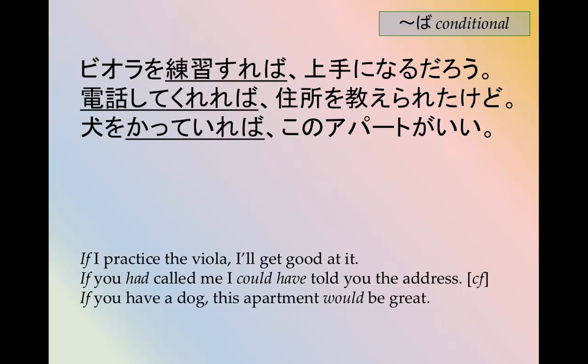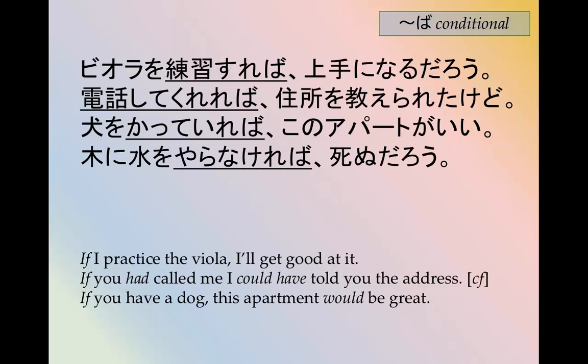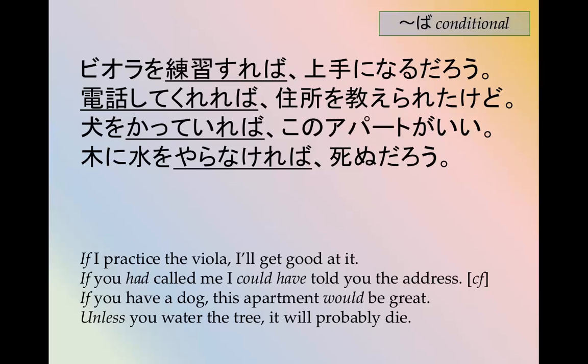イネを買っていれば、このアパートがいい — if you have a dog, this apartment would be great. So if the condition on the left is met, the condition on the right would make sense. 木に水をやらなければ死ぬだろう — unless you water the tree, it will probably die. So the negative ば — やらなければ — can also be translated as 'unless.' If you don't water the tree, it will die.